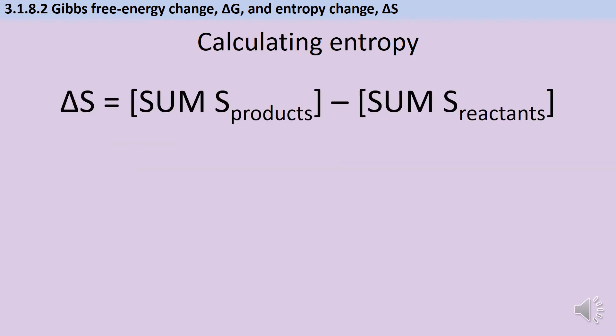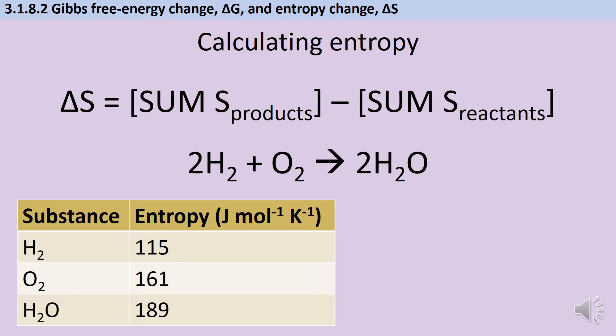In order to calculate a precise value for the change in entropy, we need to take the total entropy of the products and subtract the total entropy of the reactants. Let's look at how this works in practice.